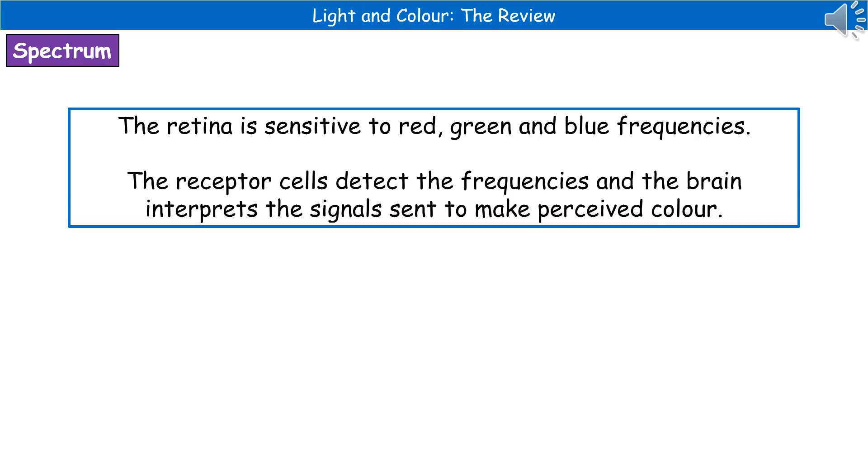So what's going to happen is, as the red, green, and blue frequencies come into contact with our cone cells, their receptor cells, they detect the frequencies sending an impulse to the brain through the optic nerve, and your brain then interprets those signals to give you that perceived color of our surroundings.